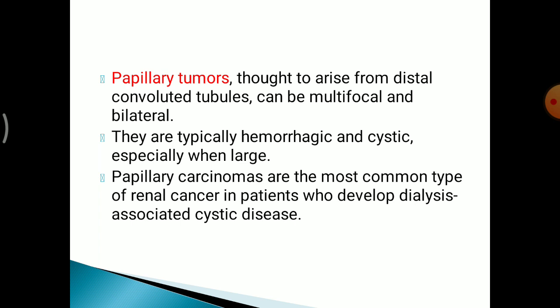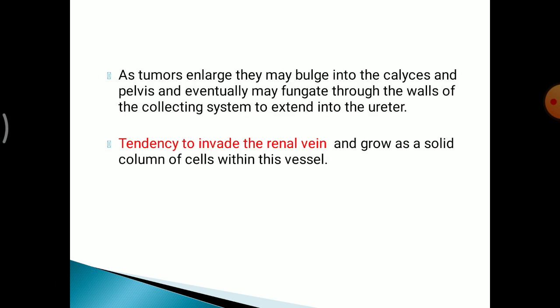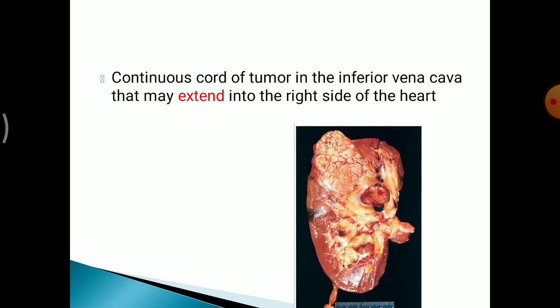Papillary tumours are thought to arise from the distal convoluted tubules. They can be multifocal and bilateral and are typically haemorrhagic and cystic. Papillary carcinomas are the most common type of renal cancer in patients who develop dialysis-associated cystic disease. As tumours enlarge, they may protrude into the calices and pelvis and may fungate through the walls of the collecting system to extend into the ureter. These tumours also have a tendency to invade the renal vein, growing as a solid column of cells within this vessel, forming a continuous cord up to the inferior vena cava that may extend into the right side of the heart.